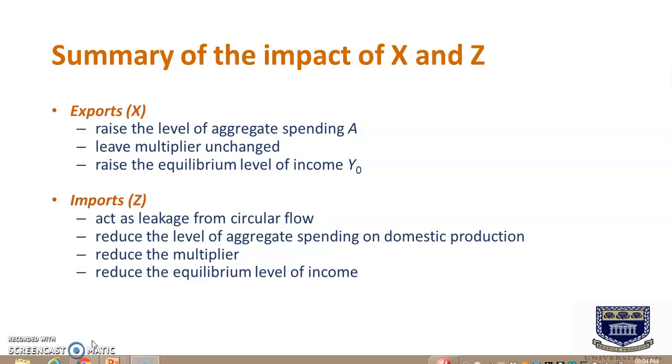This slide is simply a summary of the impact that exports and imports has on the aggregate spending function A, the multiplier, as well as the equilibrium level of income. We have discussed all of these items previously in the slides, but I will just recap that exports we know is an injection and it is autonomous. Thus it will serve to raise the level of aggregate spending A. It will leave the multiplier unchanged, and lastly it will raise the equilibrium level of income Y0.